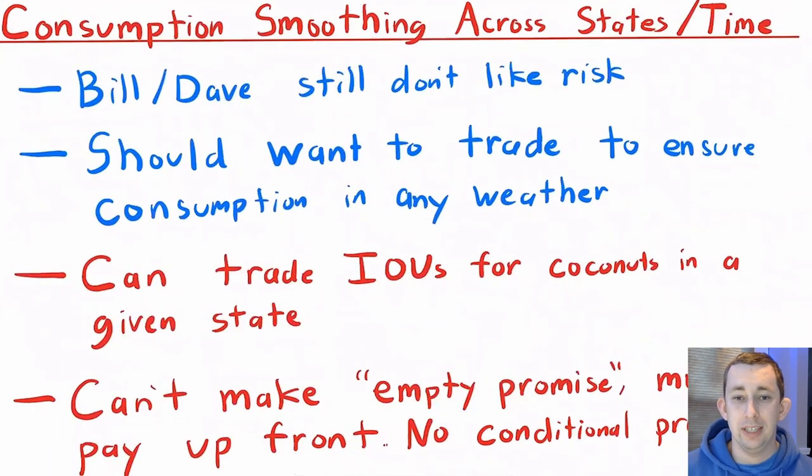We've talked about Bill and Dave wanting to smooth consumption across states, and we've talked about Bill and Dave wanting to smooth consumption across time independently. But now that Bill and Dave live forever, they can consumption smooth across both states and time. And we will see in the solution that Bill and Dave indeed want to smooth consumption across time, that consumption smoothing is going to be related to their endowment and also to the probability of each type of weather.